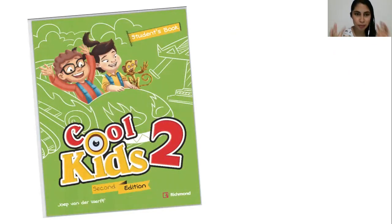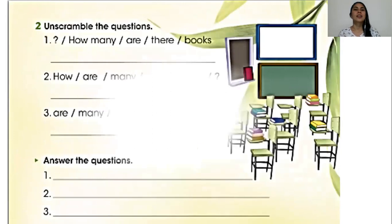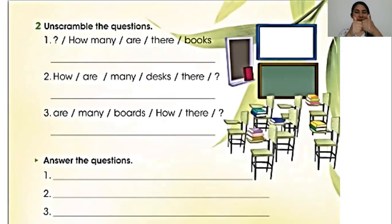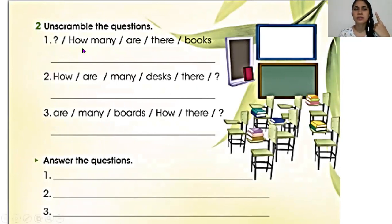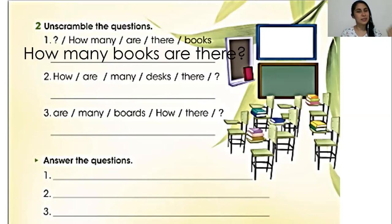Okay, let's practice. Let's start with the student's book, page 51. Activity two: unscramble the questions. You have to organize the questions. De acuerdo a lo que ya vimos, ¿cómo preguntamos? It's easy. How many... then the object or animal. Books. And after: are there. How many books are there?